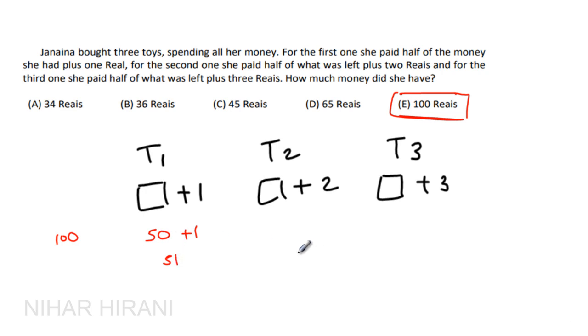Now after she spends 51, leftover is 49. Now she's spending half of leftover money for toy 2. So half of leftover is 49. Half of 49 is 24.5 plus 2, that is 26.5.